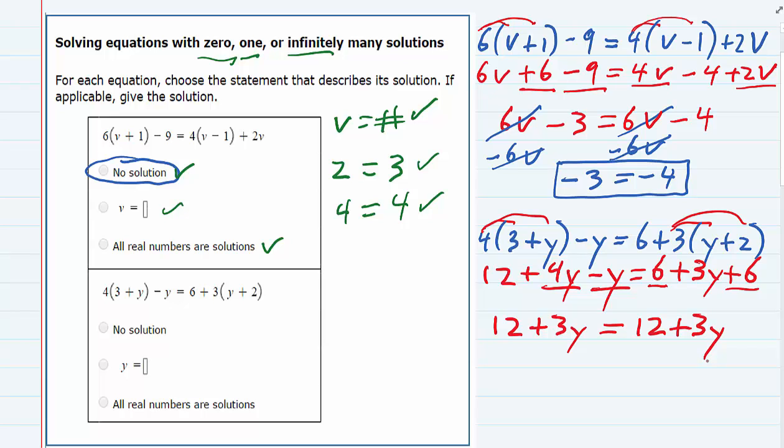And if we were trying to get the y by itself on one side, I would have to move one of them. So let's say I move the one on the right, minus 3y, over to the left. Those would cancel, and I would now have 12 equals 12.